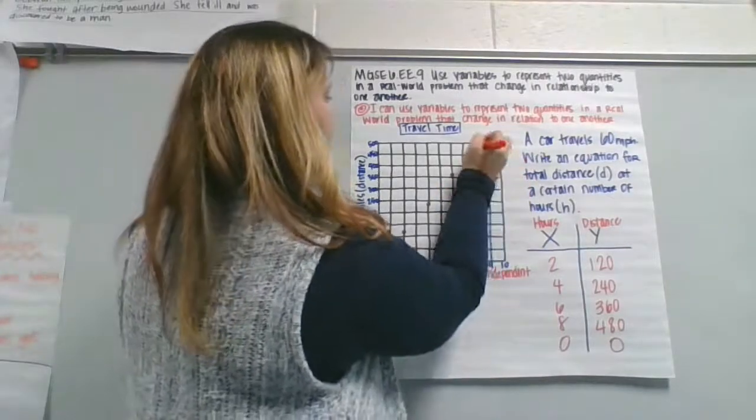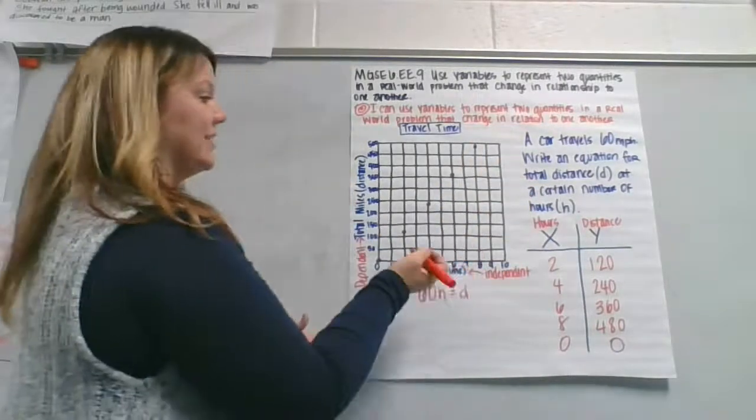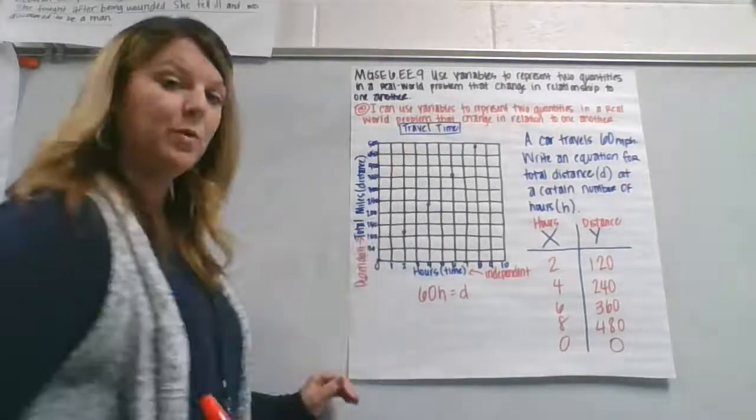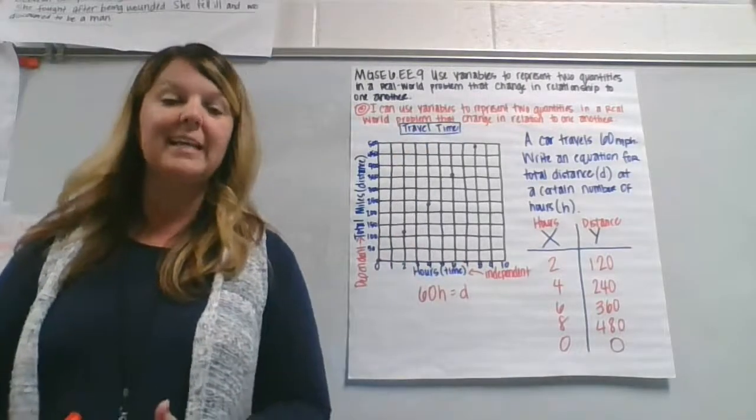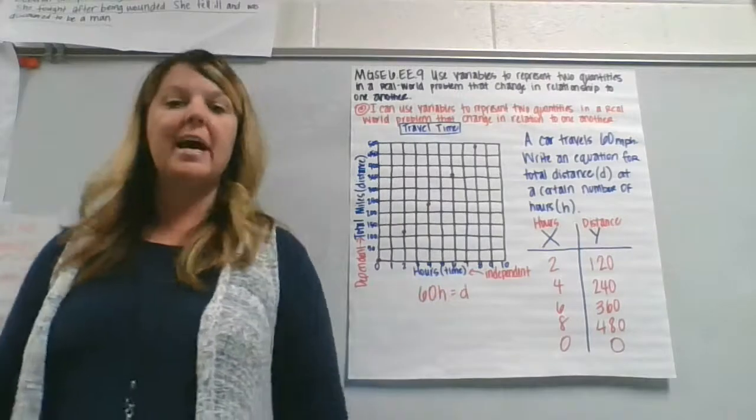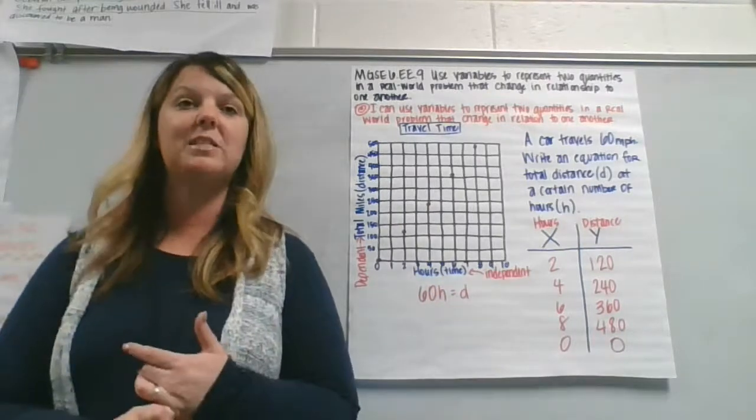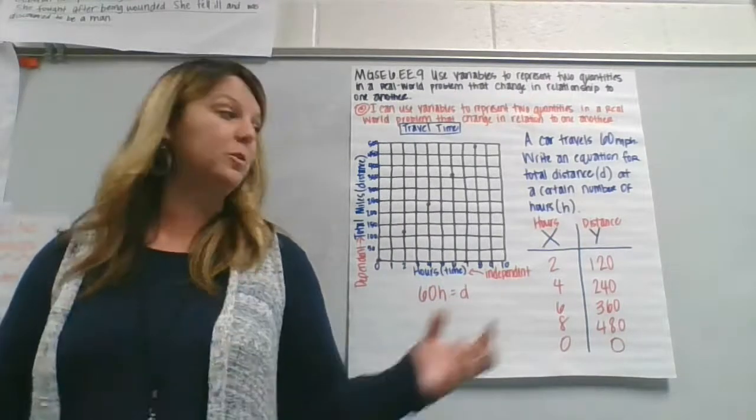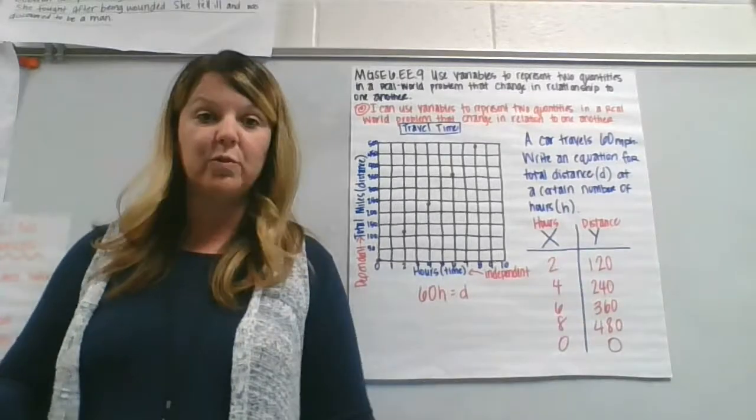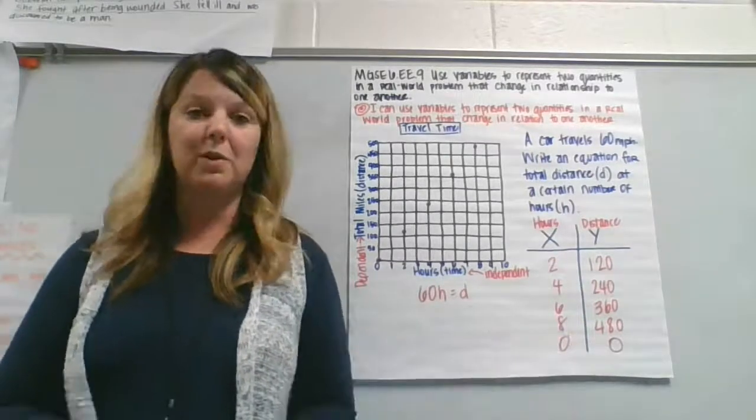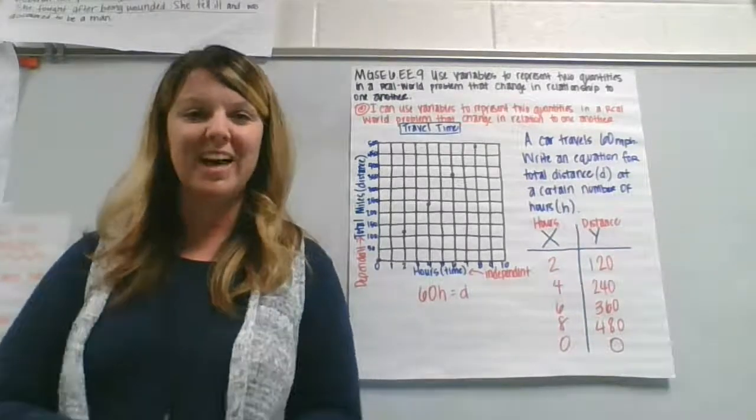So as you can see, this is a linear equation. It does create a straight line. And that's pretty much it. Understand which variable is dependent upon the others. Be able to find various values for that equation and be able to plot them on a line plot. Good luck.